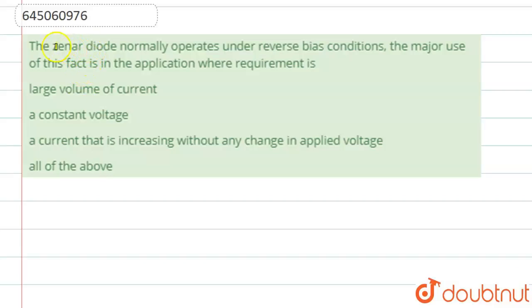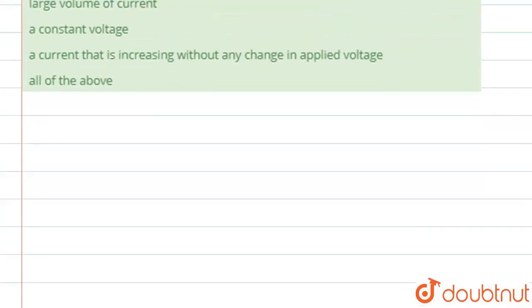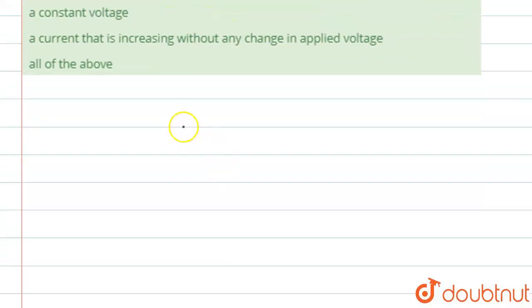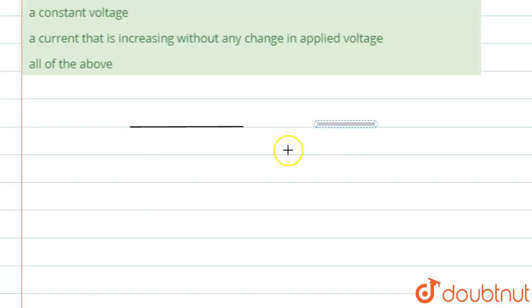Hello students. The question says that the Zener diode is normally operated under reverse bias condition. The major use of this fact is in the application where the requirement is — we have to find where is the major use of this application. So it is connected in reverse bias. What is a Zener diode? I'll show you how we draw a Zener diode.